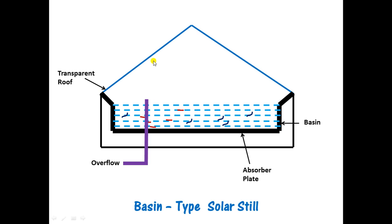This roof is called the transparent sloping roof — sloping because it is sloping in shape. This is the assembly used for the basin-type solar still.